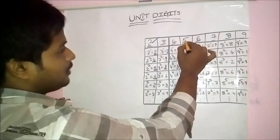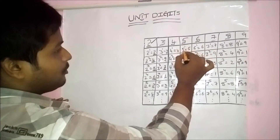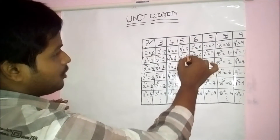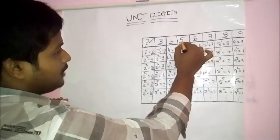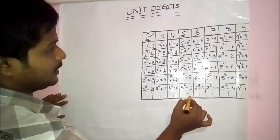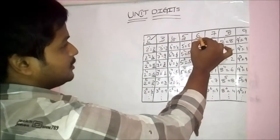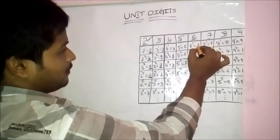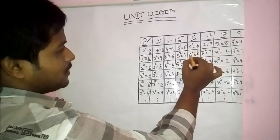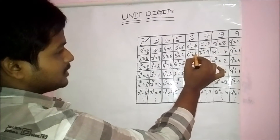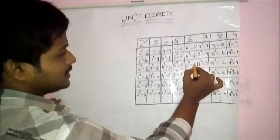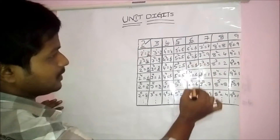For 5: 5 power 1 is 5, 5 squared is 5 — always for 5, the unit digit is always 5. You can observe in the table. For 6, the unit digit is always 6. 6 power 1 is 6, 6 squared is 36 — unit digit is 6, 6 cubed is 216 — unit digit is 6. Similar fashion.